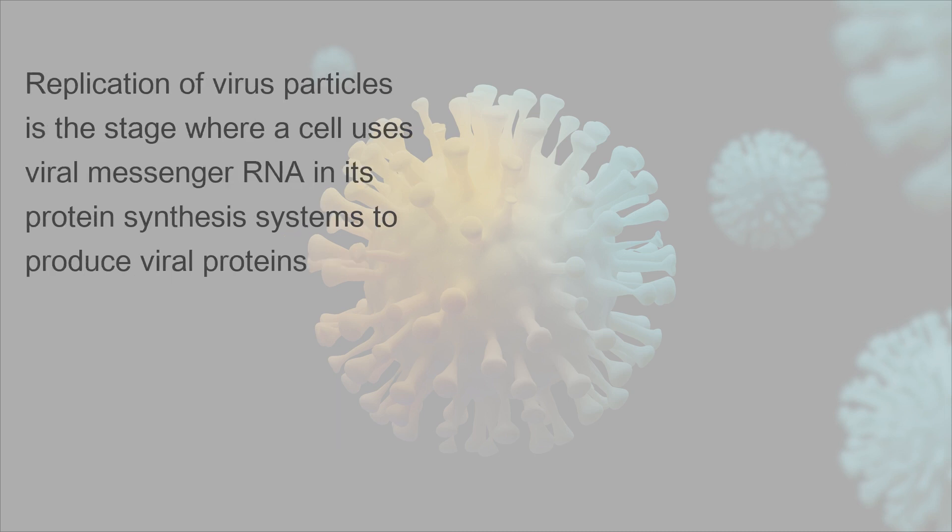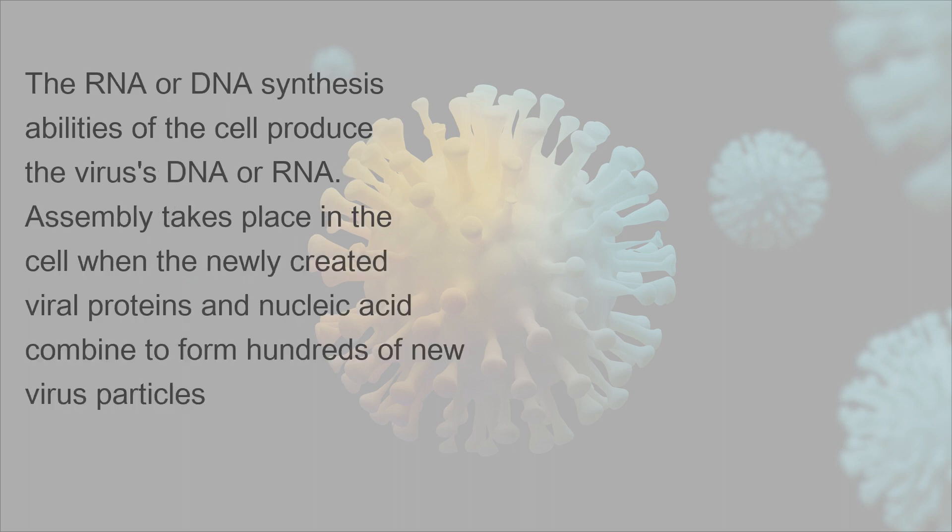Replication of virus particles is the stage where a cell uses viral messenger RNA in its protein synthesis systems to produce viral proteins. The RNA or DNA synthesis abilities of the cell produce the virus's DNA or RNA. Assembly takes place in the cell when the newly created viral proteins and nucleic acid combine to form hundreds of new virus particles.